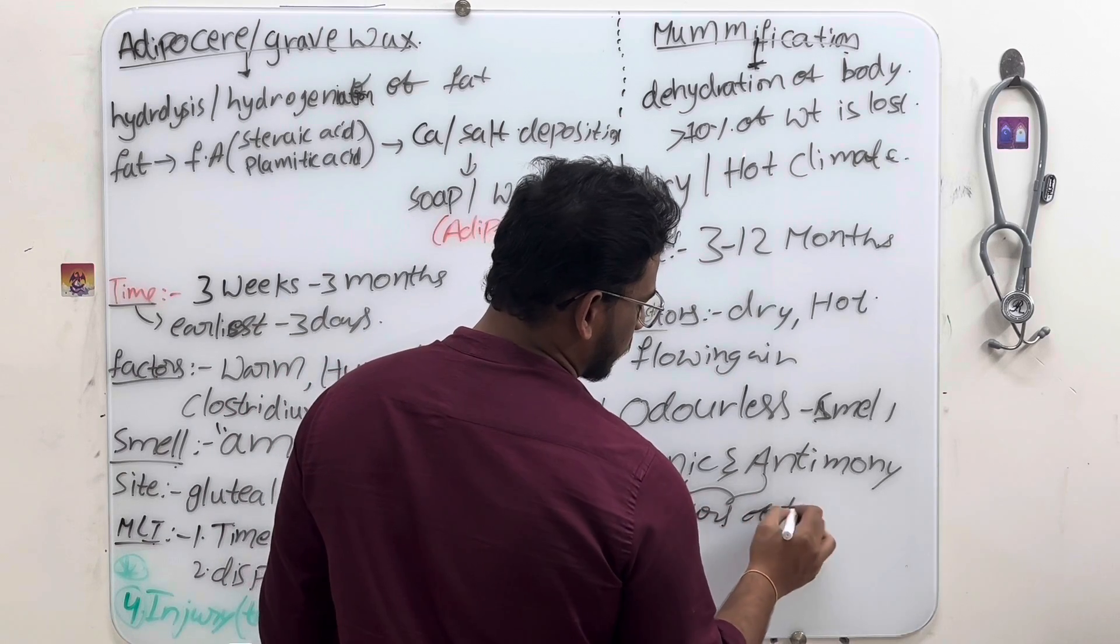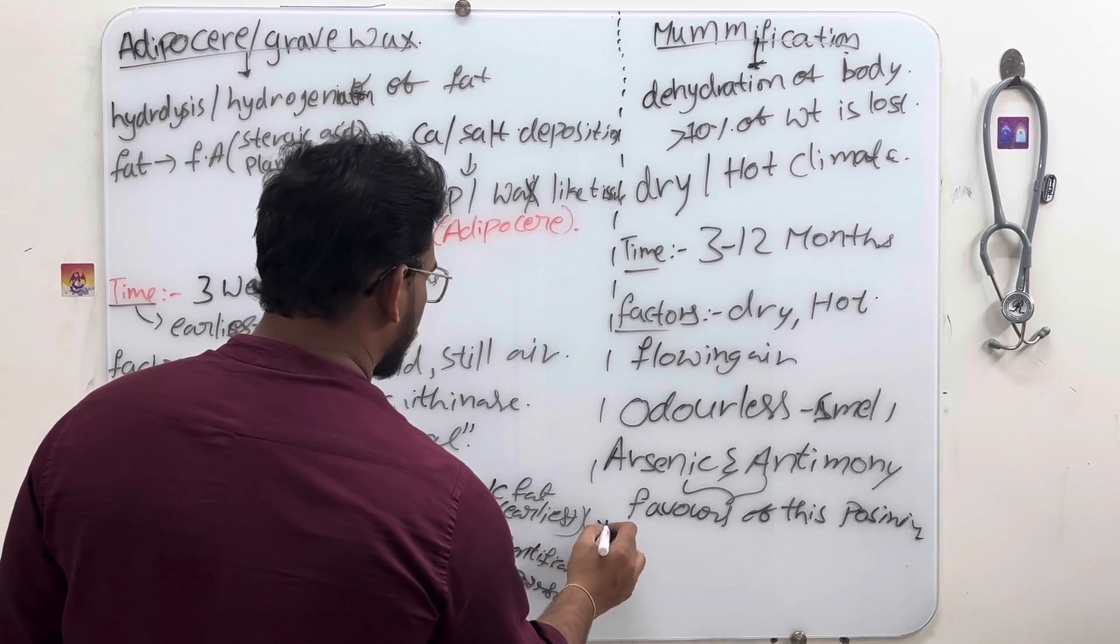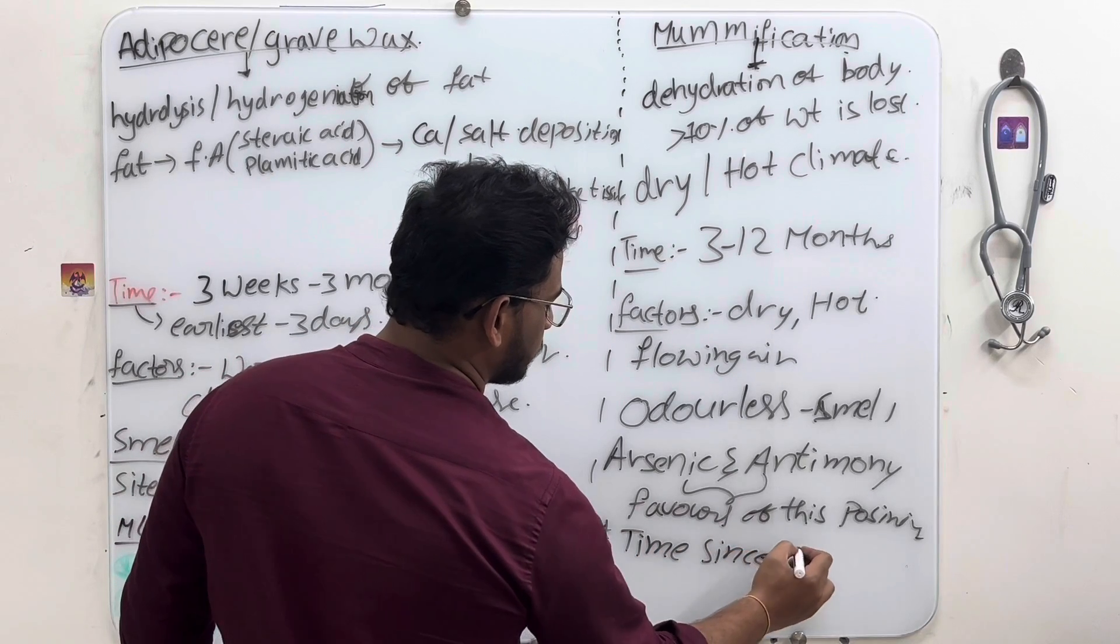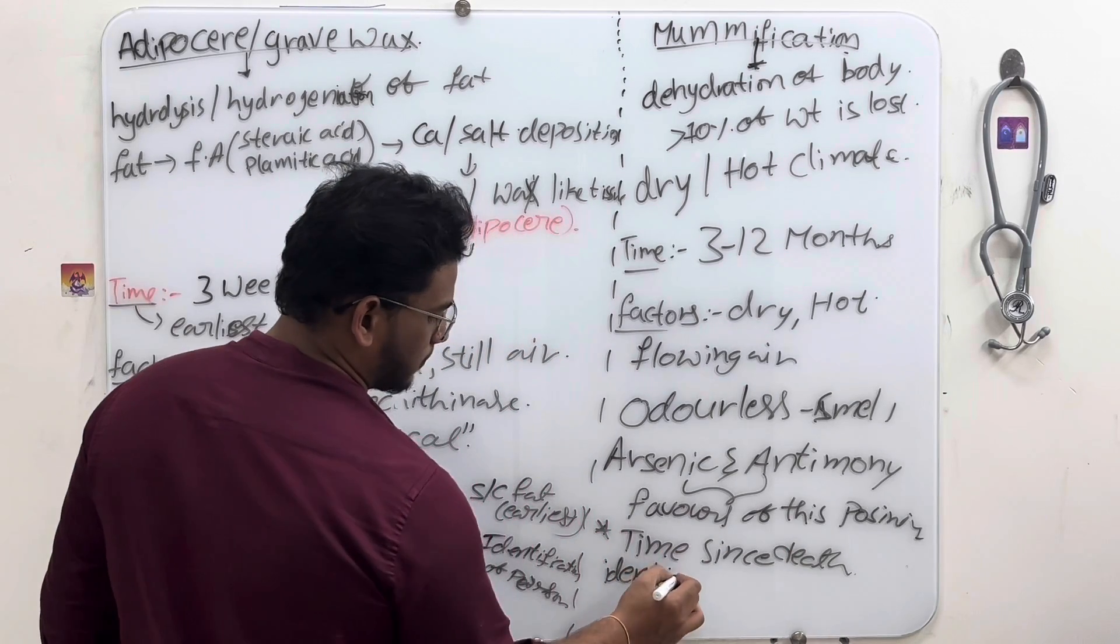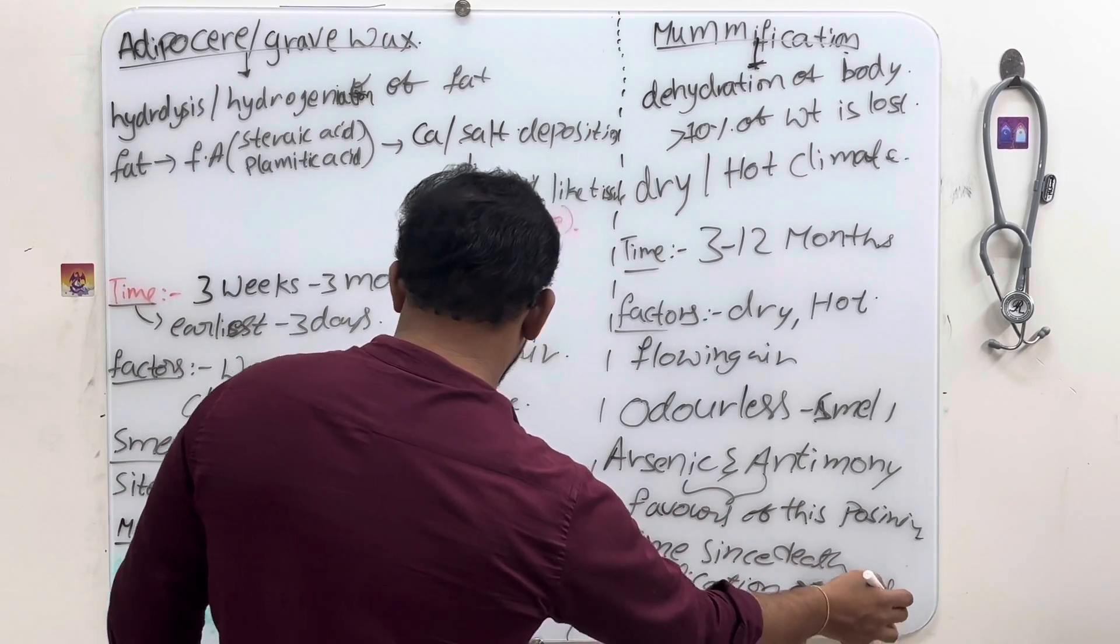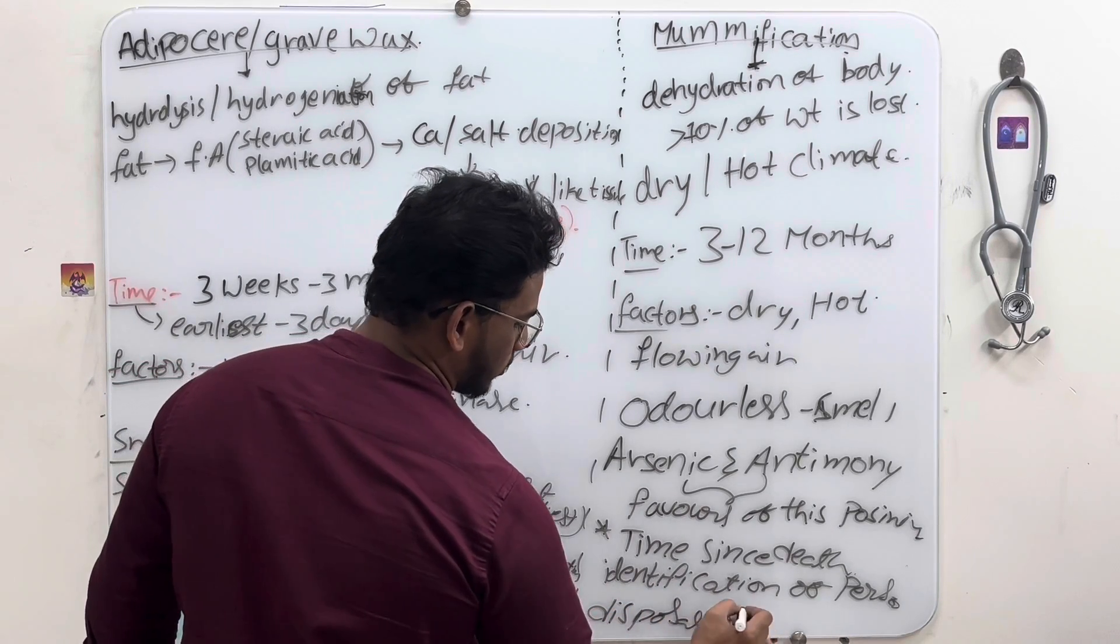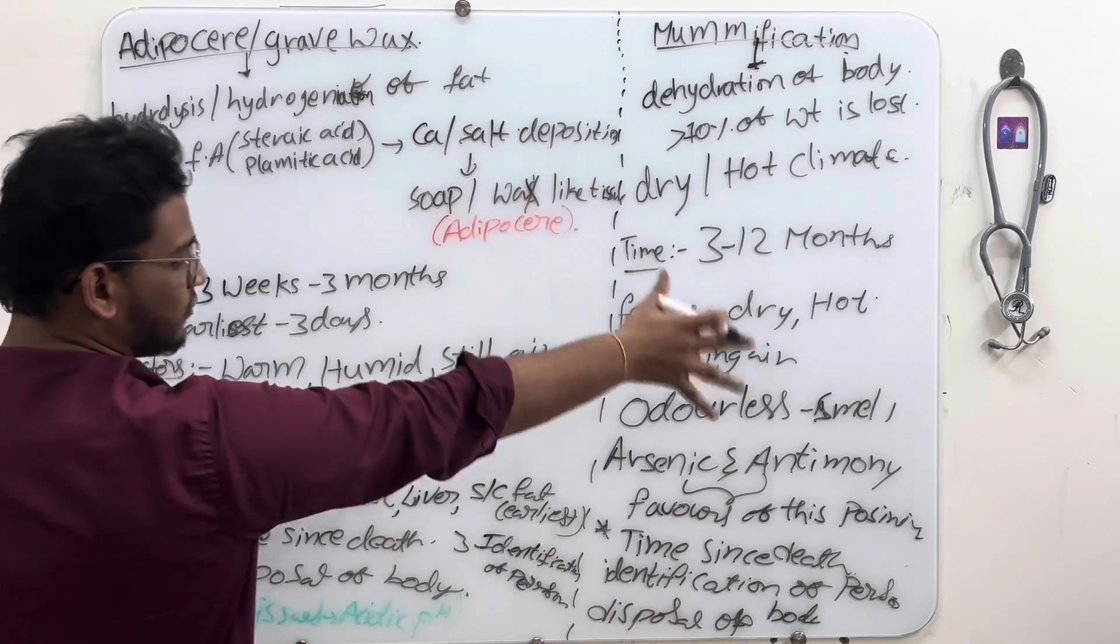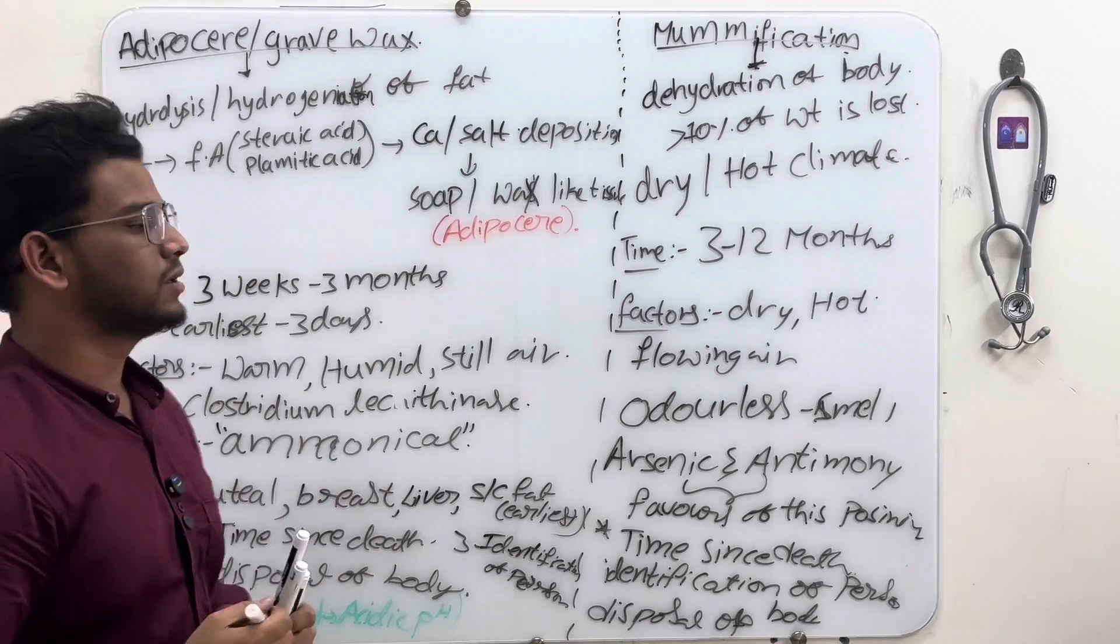Medical-legal importance: we can find time since death, identification of person, and disposal of body. In adipocere we can find injuries, but in mummification we can't find injuries. This is all about adipocere and mummification. Thank you.